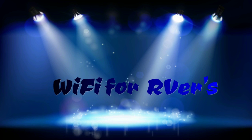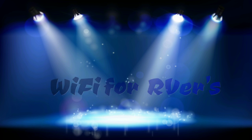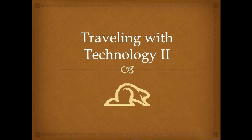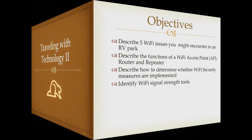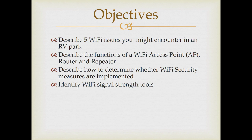Welcome to the Traveling with Technology presentation on Wi-Fi. The objectives for this presentation include the following: describe the five Wi-Fi issues you might encounter in an RV park; describe the functions of a Wi-Fi access point, router, and repeater; describe how to determine whether Wi-Fi security measures have been implemented; and identify a Wi-Fi signal strength tool.